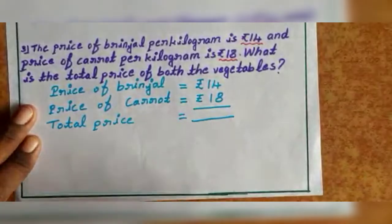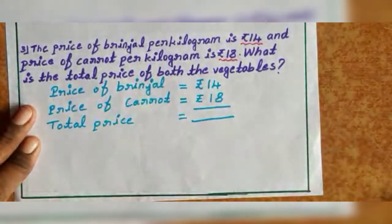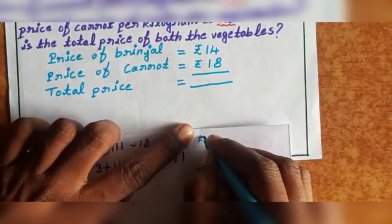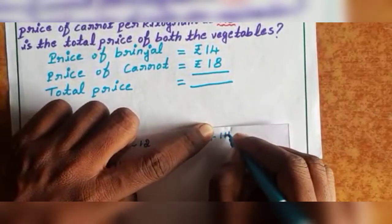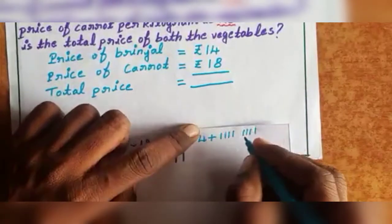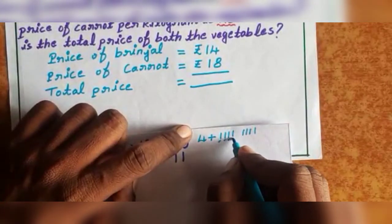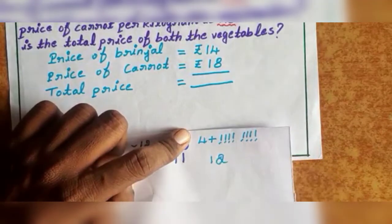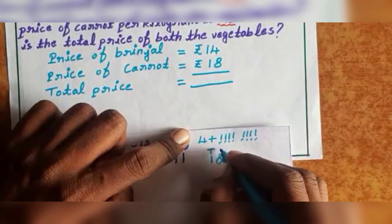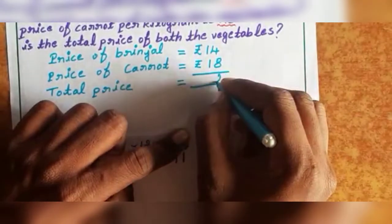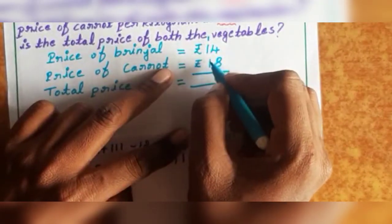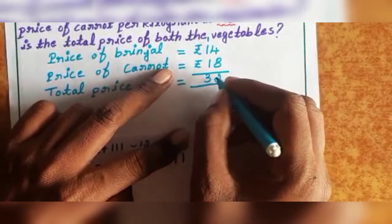Now you can add these numbers. First add units: 4 plus 8. Draw 8 lines and count now from 4: 5, 6, 7, 8, 9, 10, 11, 12. So 4 plus 8 equals 12. In 12: 1 ten and 2 units. Write unit 2 here. Balance 1 you can transfer to the next place. So 1 plus 1 equals 2, then 2 plus 1 equals 3. Total 32 rupees.